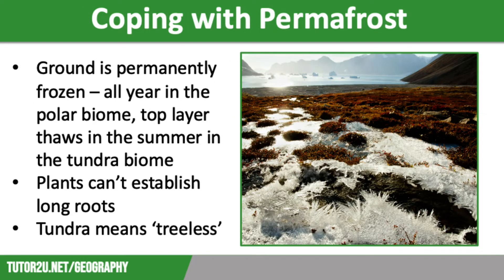Our first issue for plants to deal with is permafrost. This means that the ground is permanently frozen, which is the case all year round in the polar biome, although the top layer of soil will thaw in the summer in the tundra biome, leaving a frozen layer below. The frozen ground means that plants can't establish long roots, so only species with a shallow root system will survive, such as mosses, lichens, and some low-growing shrubs.